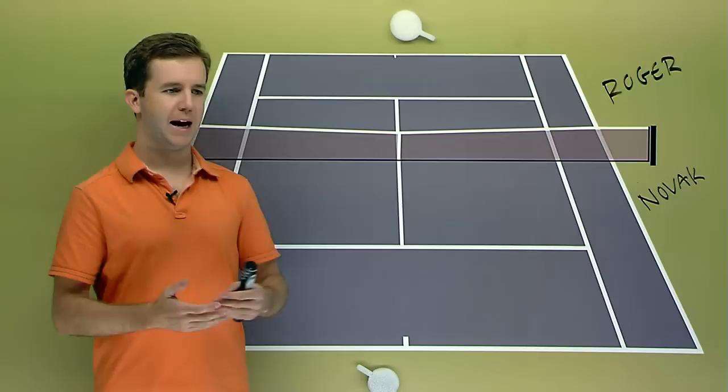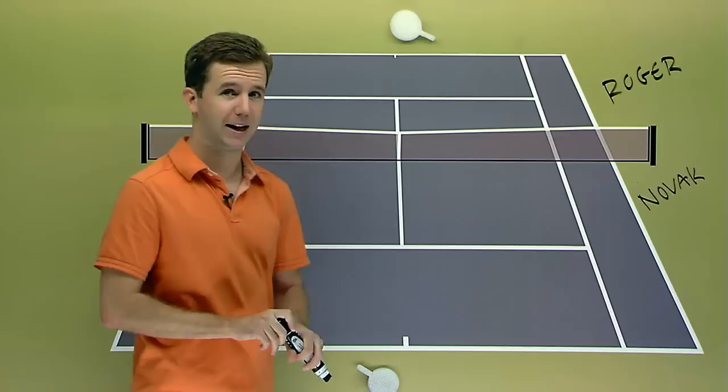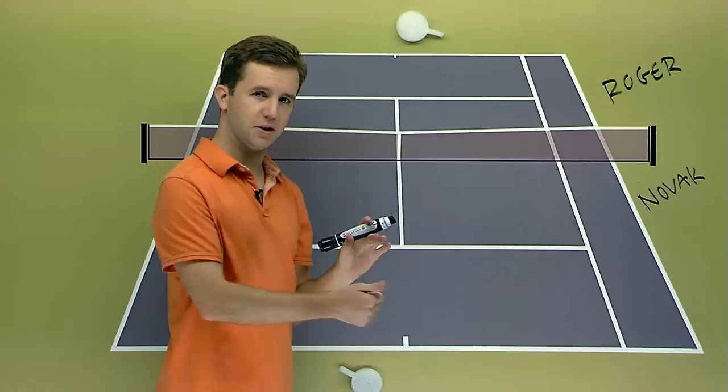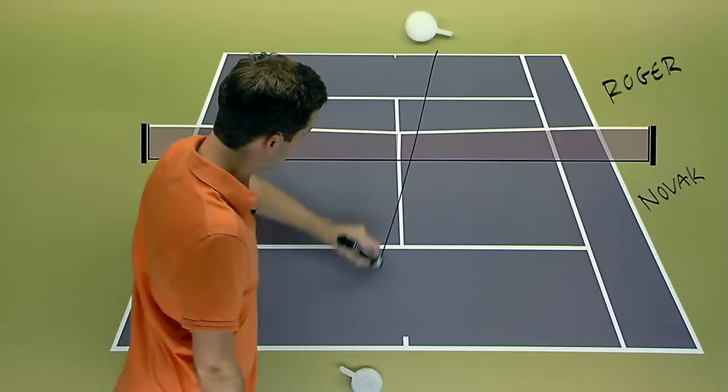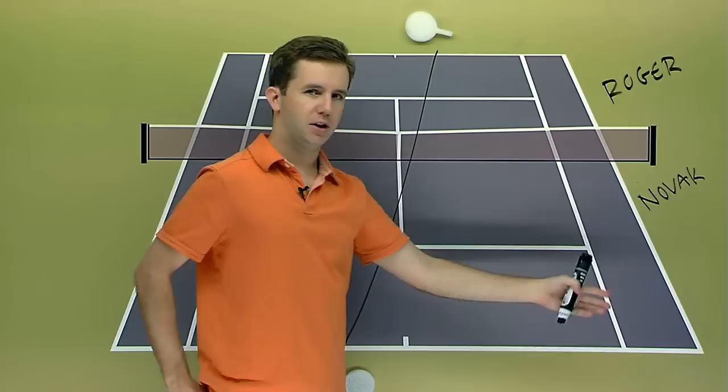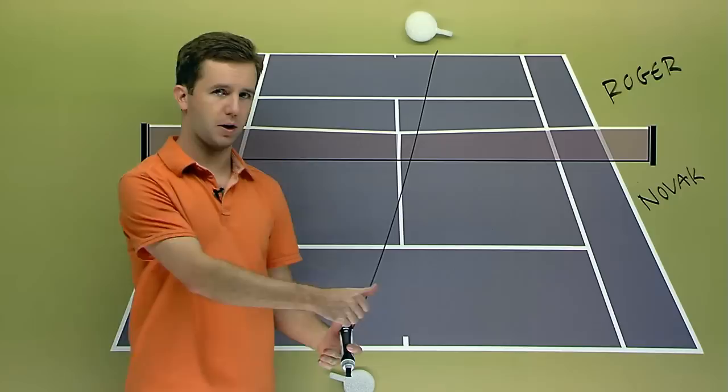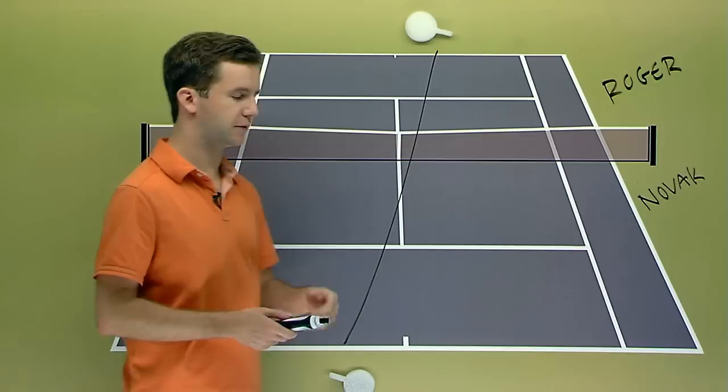Federer, of course, particularly with the backhand, has a ton of variety. And where he had success in the Aussie Open semis and then at Indian Wells was this cross-court exchange here. Roger would mix it up. Initially when Roger lost the first set in the Aussie Open and then at Indian Wells, a lot of trying to hit through the backhand, really trying to hit aggressively. And that didn't really work too well.